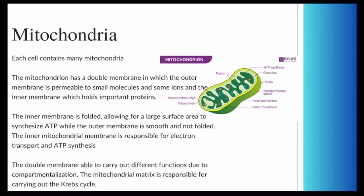The mitochondria is basically responsible for all the energy within the cell. It synthesizes ATP within the inner membrane, which is folded, which allows for a large surface area. The inner membrane is folded, and the double membrane allows compartmentalization. The mitochondrial matrix, which is shown here, is responsible for carrying out the Krebs cycle.